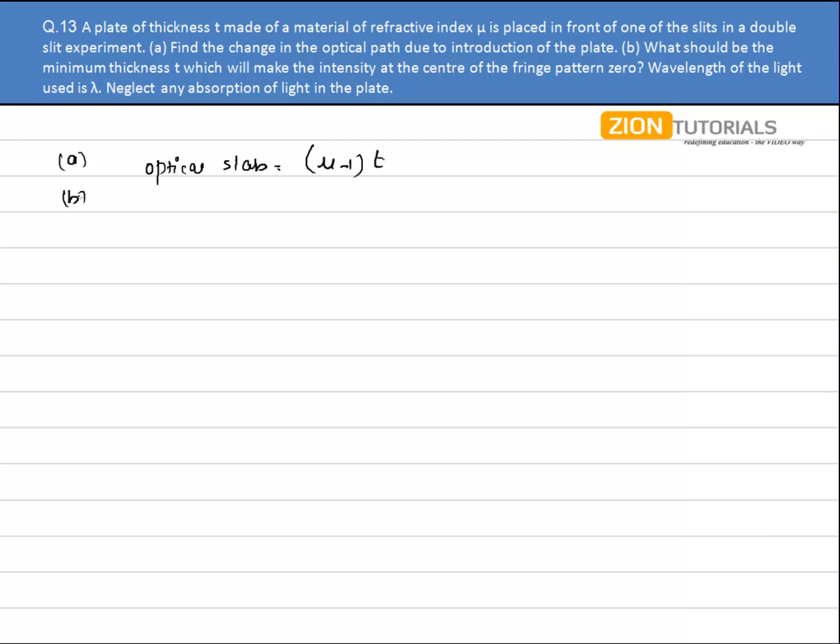Initially what is happening is that the path difference at the center, let's say this is my screen and these are like slits, fine. So initially at the center the path difference, that is the delta x, is lambda. This is at the center. Now I want that the path difference should be reduced to zero.